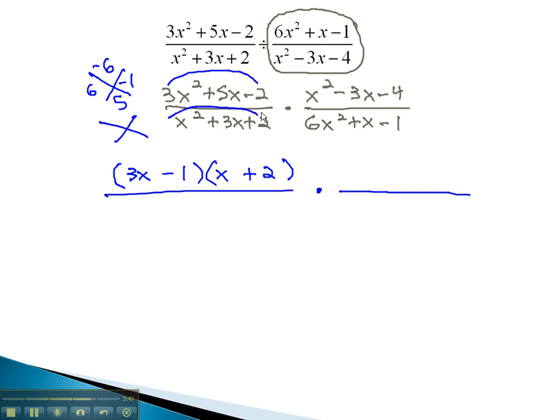In the denominator, we're multiplying to 2 and adding to 3. This is 2 times 1. With a 1 in front of x squared, that tells us the factors are x plus 2 times x plus 1.